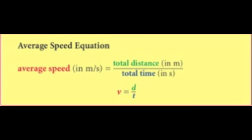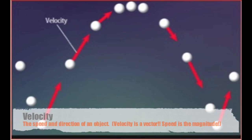Which brings us to velocity. Velocity is the speed and direction of a moving object. Because velocity has both size — or magnitude — and direction, velocity is a vector. We already know that speed is the rate of change of distance over time, and velocity is the speed and direction.